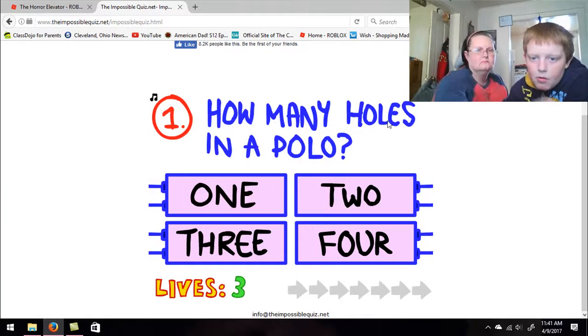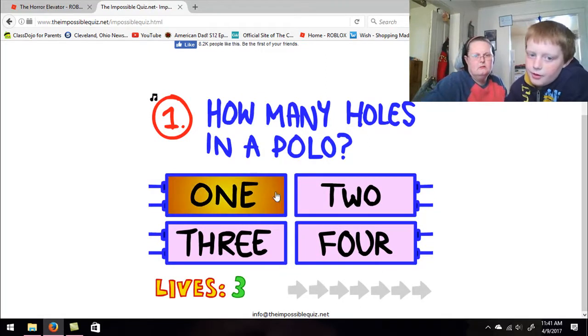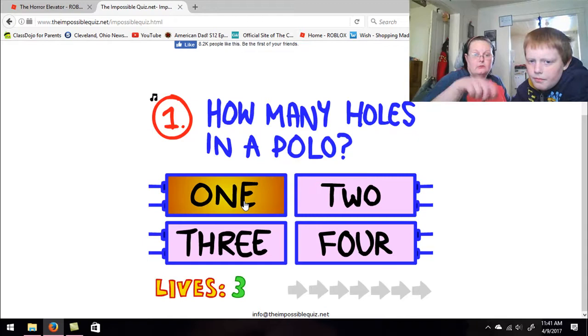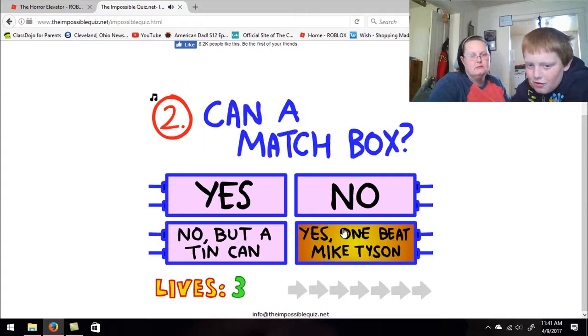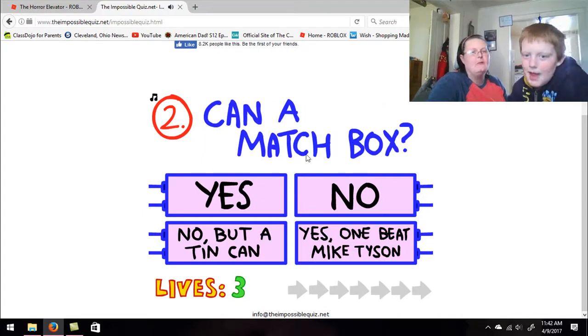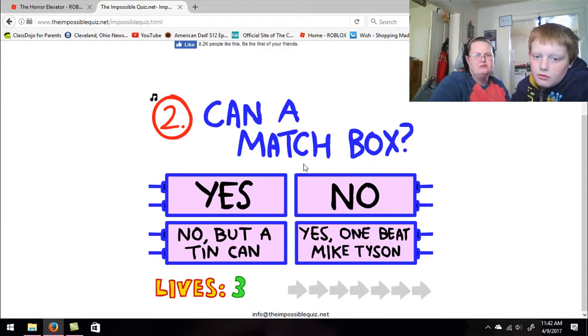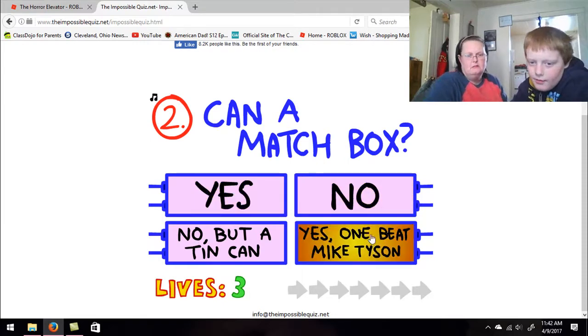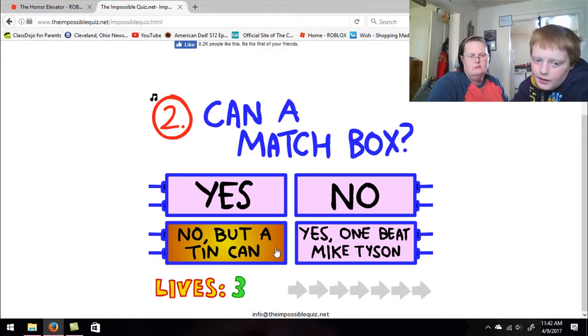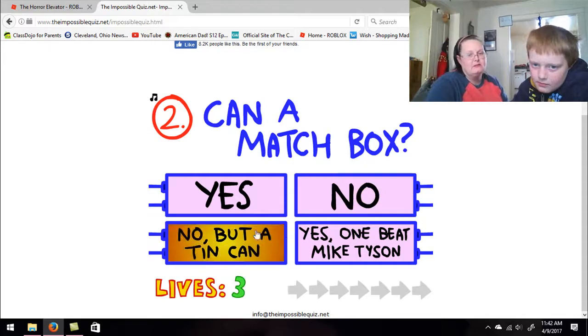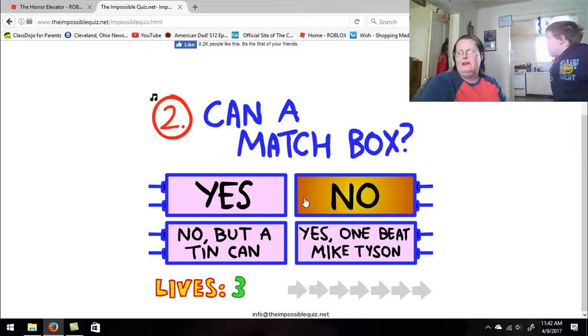How many holes are in a polo? Holes? I'd say two. I don't know what a polo is. Four? One. Beat Mike, can a matchbox? Can a matchbox? Yes, no. Yes but no one. No but a tin can. That's why it's saying can a matchbox. We must have got it right though, we have three lives.